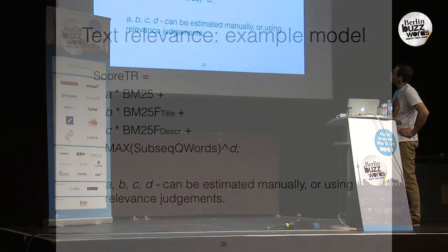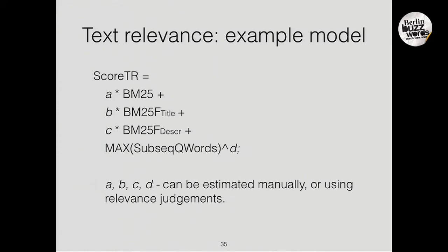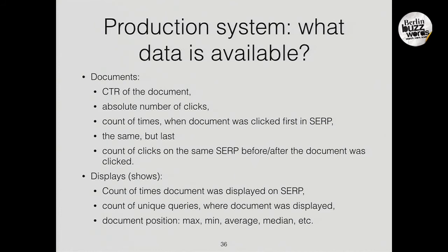Here is a simple example of how to mix signals — coefficients A, B, C, D can be estimated manually or using relevance judgments. If we have a production system — meaning we have real search with users making queries and clicking results — we can record this data, process it in the background or in real time, extract signals from it, and use them in ranking. This is actually how all big search systems like Google, Bing, and Yandex work.